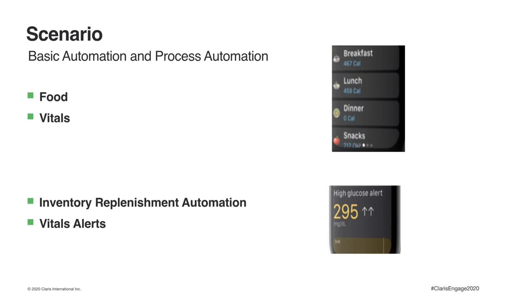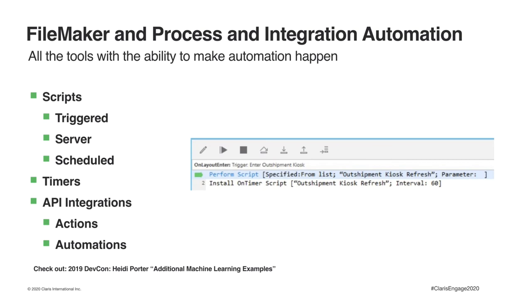For basic automation and storing data for food and vitals, FileMaker has tools for keeping data central, accessible, and clean. When we get to process and integration automation, you can implement things like inventory replenishment automation for food items or vitals alerts for health issues. Note that data triggers these automations and alerts. FileMaker has many tools for process and integration automation: you can trigger scripts, run scripts on server, schedule scripts, and use timers to run tasks at specific time intervals. You can also integrate with APIs for actions and automations. At a previous DevCon, I showed an example where I trained a model to automatically classify parts via an API integration with a tool called MonkeyLearn — check out that DevCon talk.